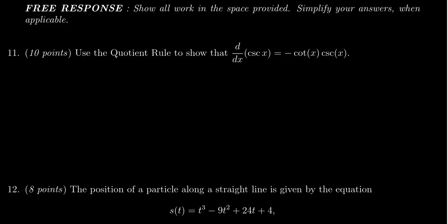In this video, we will provide the solution to question number 11 for practice exam number 3 for Math 1210, in which case we're told to use the quotient rule to show that the derivative of cosecant of x is equal to negative cotangent of x times cosecant of x.